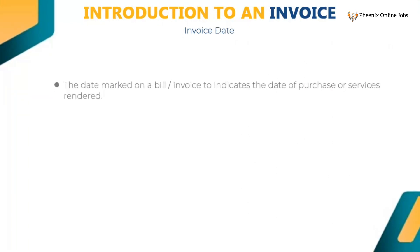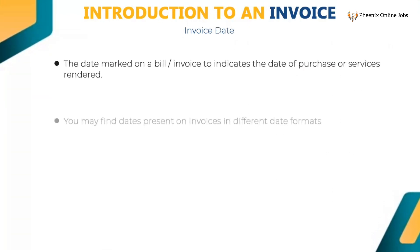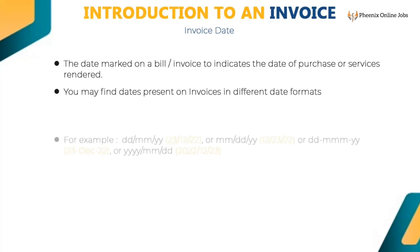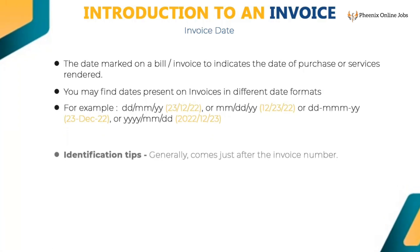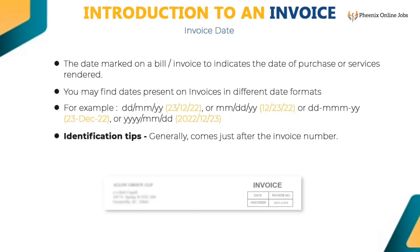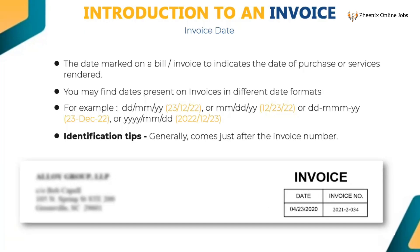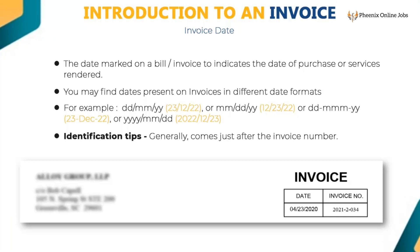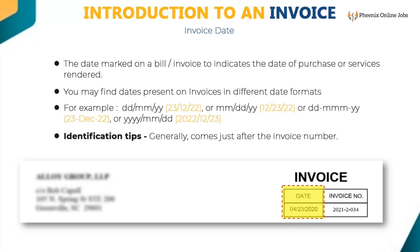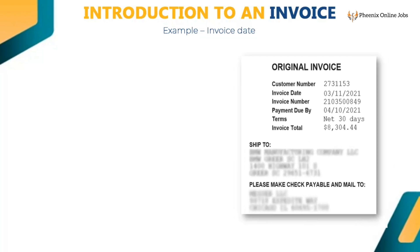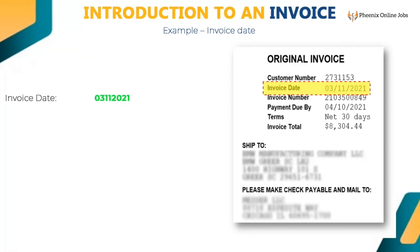The invoice date is the date marked on a bill or invoice to indicate when a purchase or service is rendered. Different date formats are used: DD/MM/YY, MM/DD/YY, or YYYY/MM/DD. You should capture the date in the MM/DD/YYYY format. It generally comes just after the invoice number. Key the date in numbers — for example, 03112021 — and do not key the word 'invoice date.'